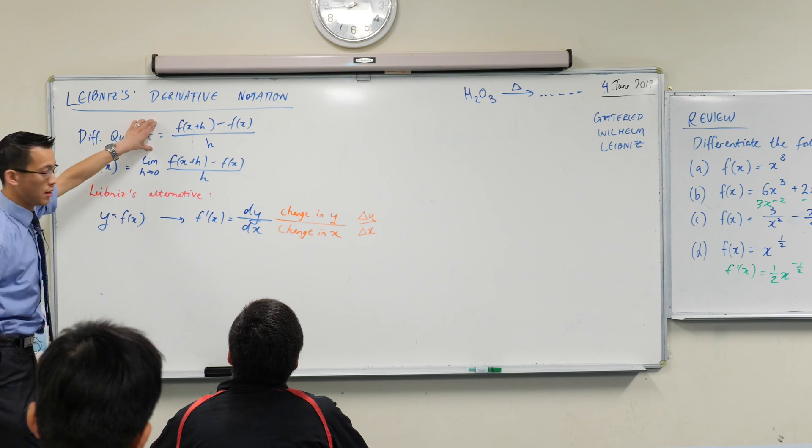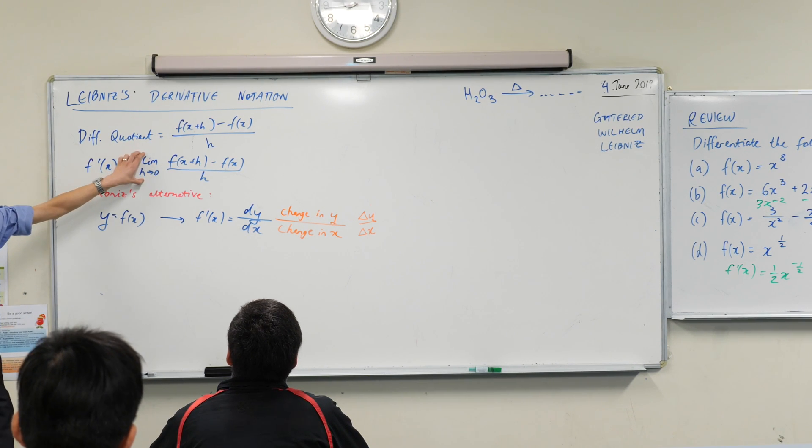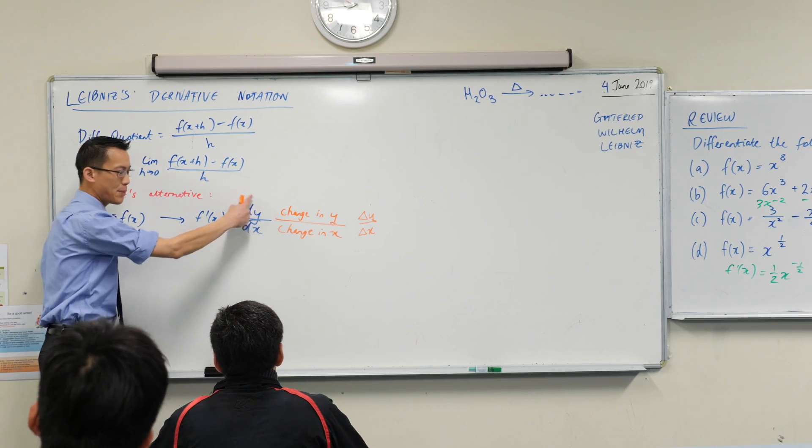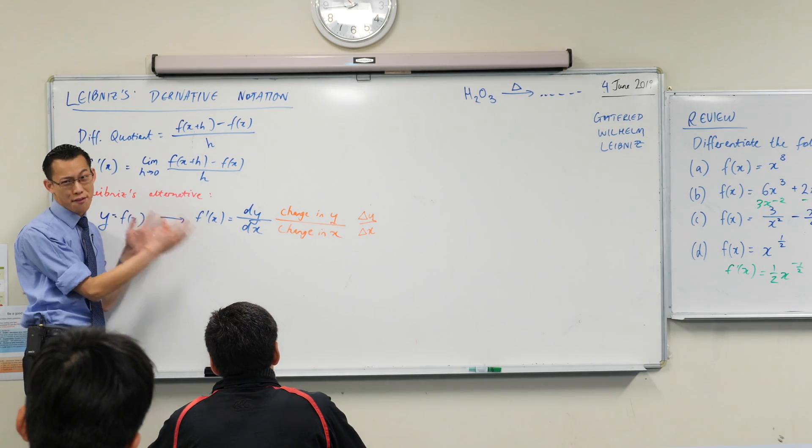We have to go from this guy, which is the gradient of the secant, to this guy, which is the gradient of the tangent. We do it by means of this weird limit business, right? So, in fact, there's a lot happening underneath here. It's not just a fraction.